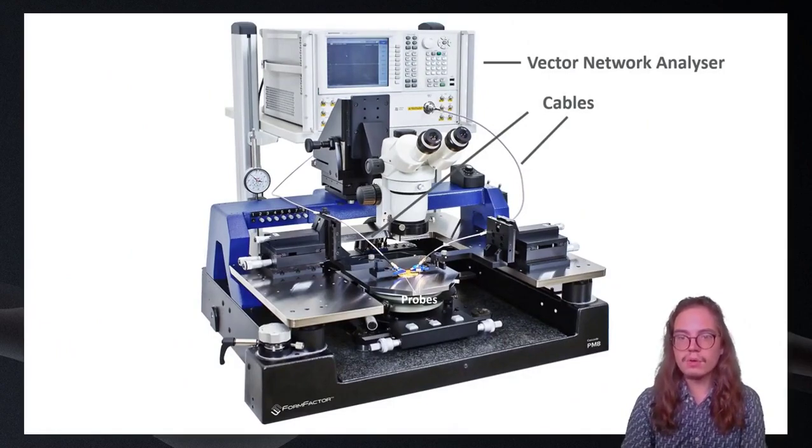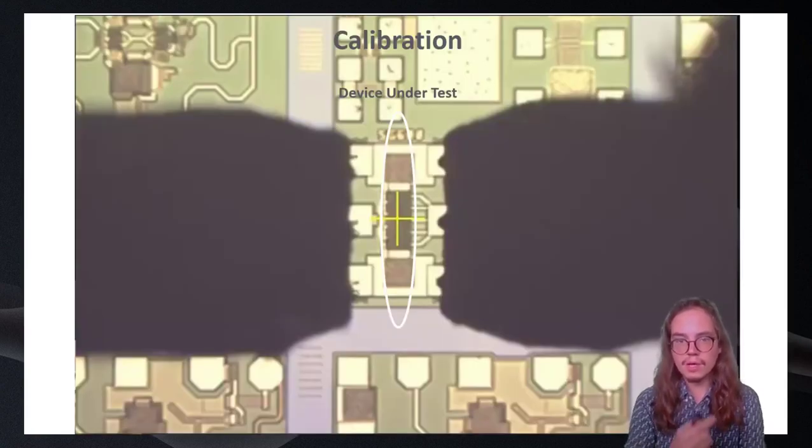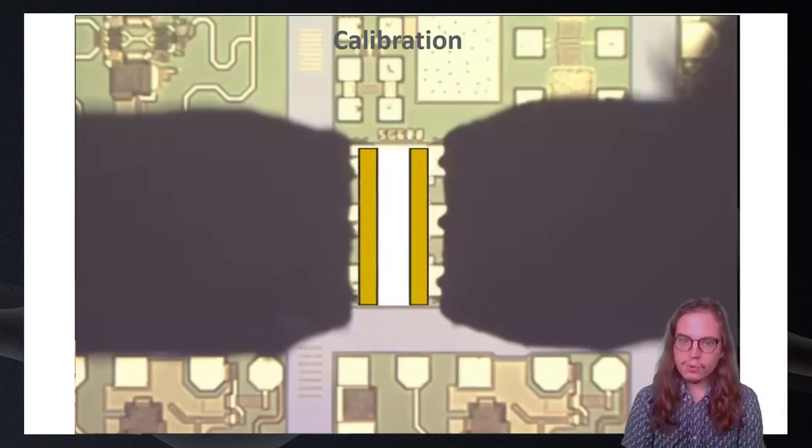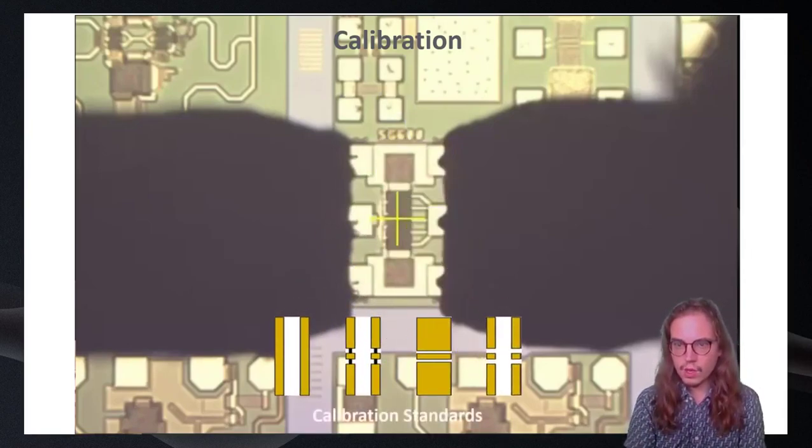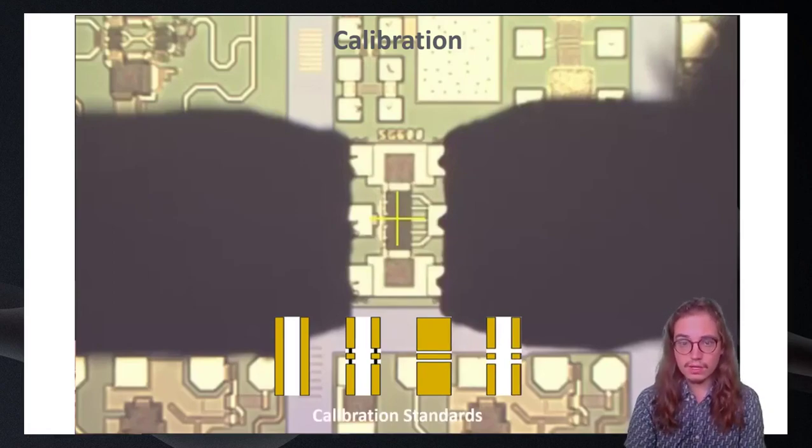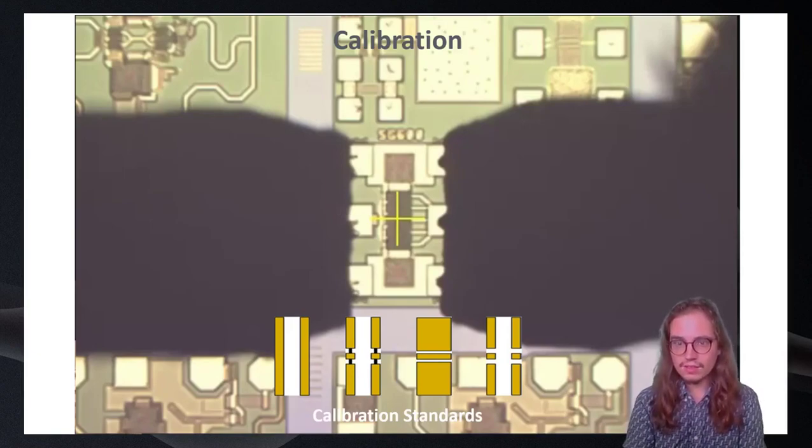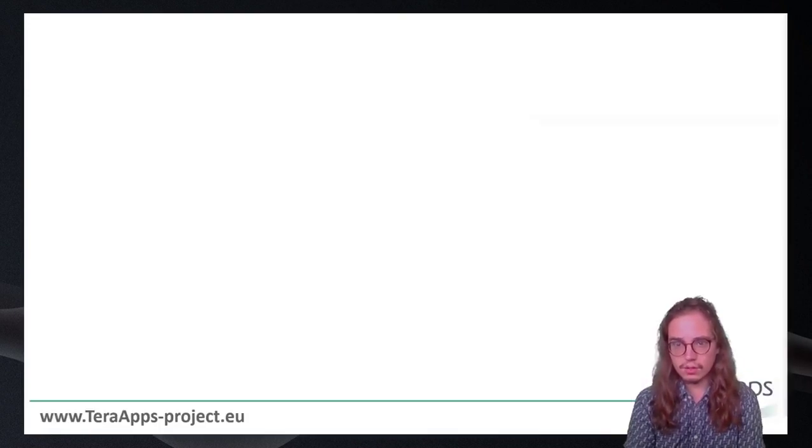To isolate the behavior of the device we would like to characterize, it is necessary to know the behavior of all those fixtures. We call this step calibration. For that purpose, we use different known devices that we measure with the same system. However, behavior of those calibration standards needs to be known precisely, since they will mostly determine the quality of the measurements. This is why we have to model the behavior of those calibration standards according to microwave theory.